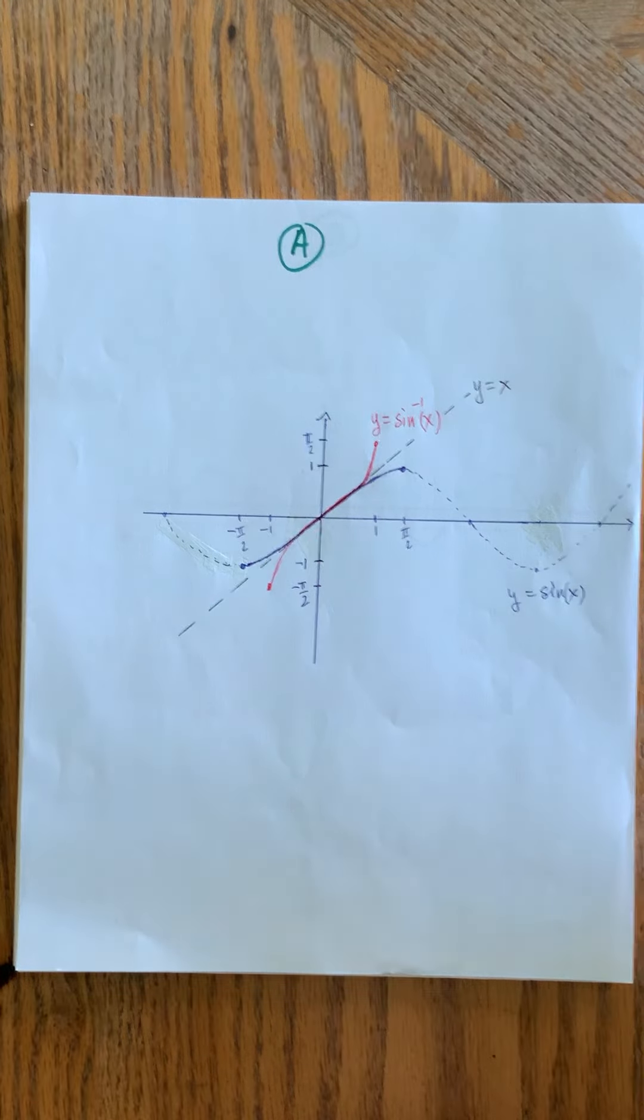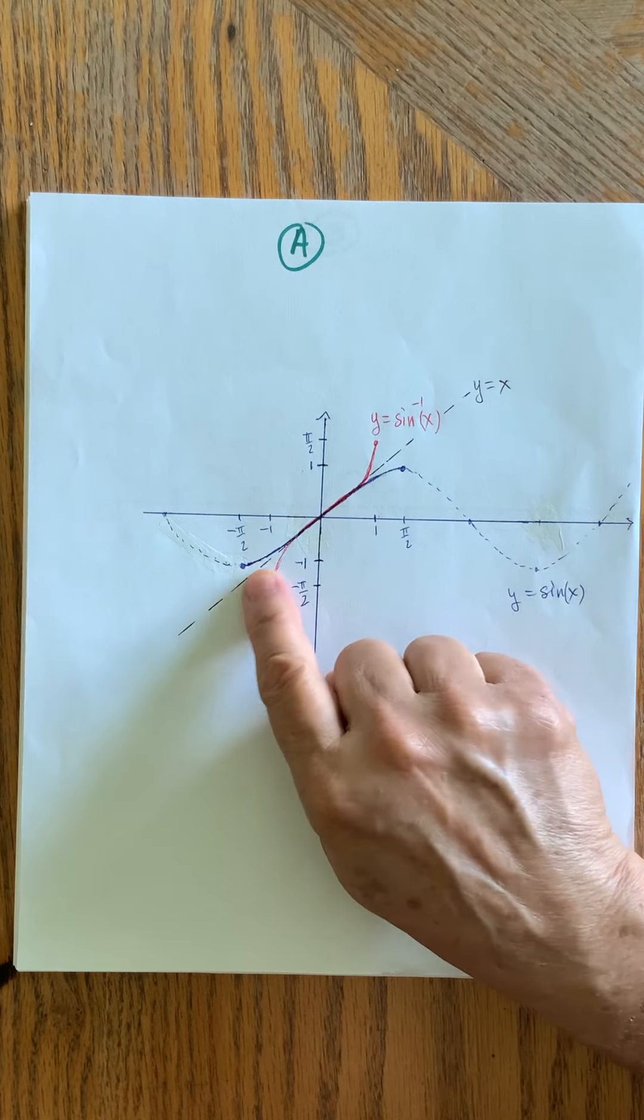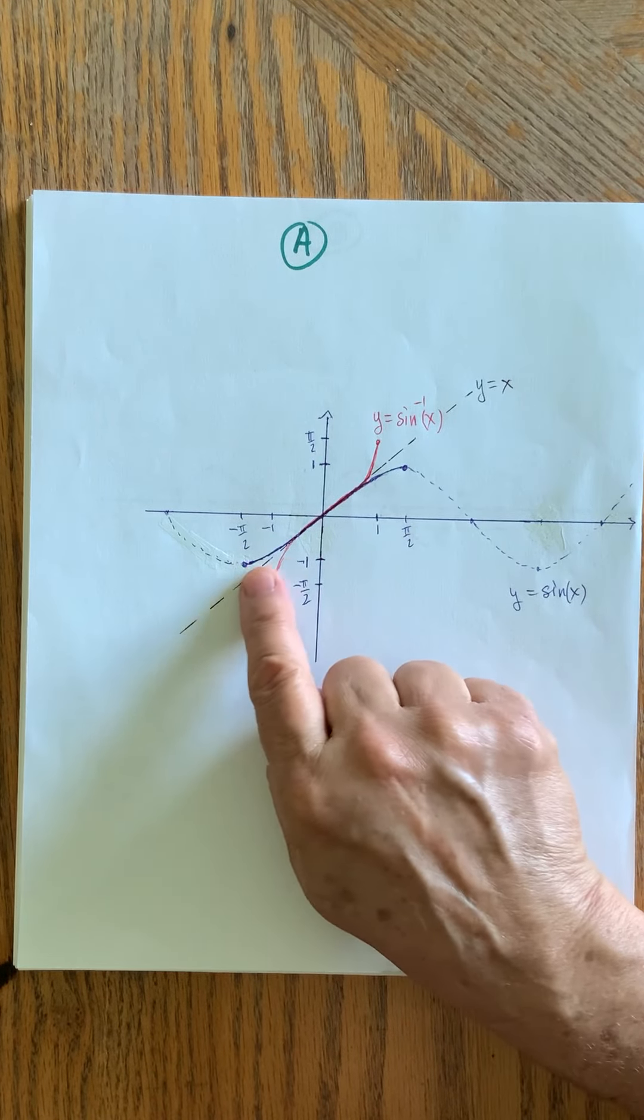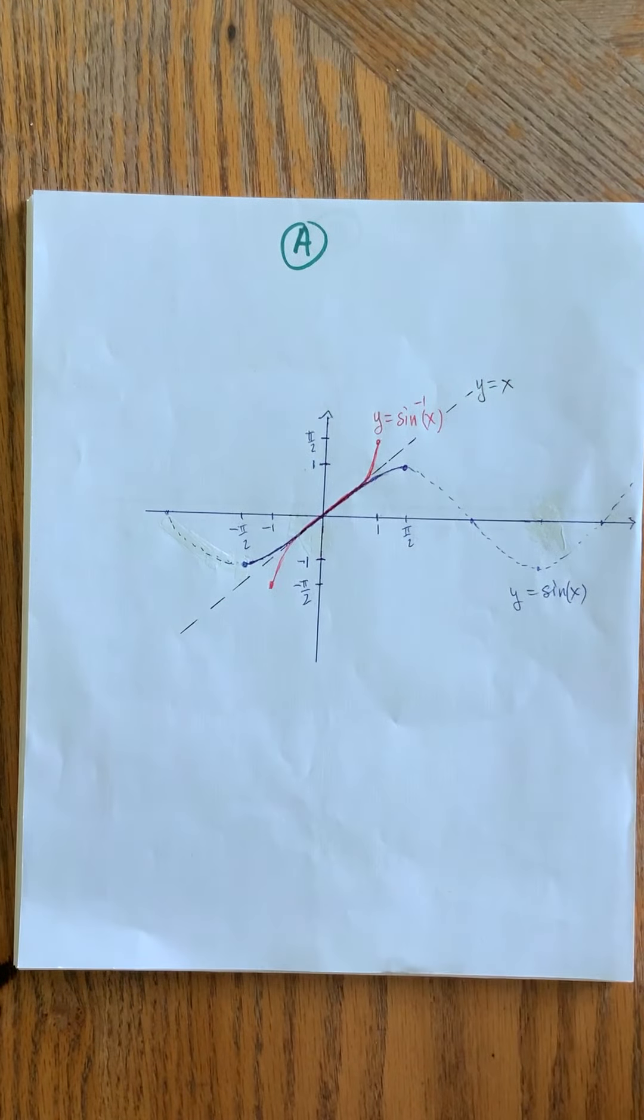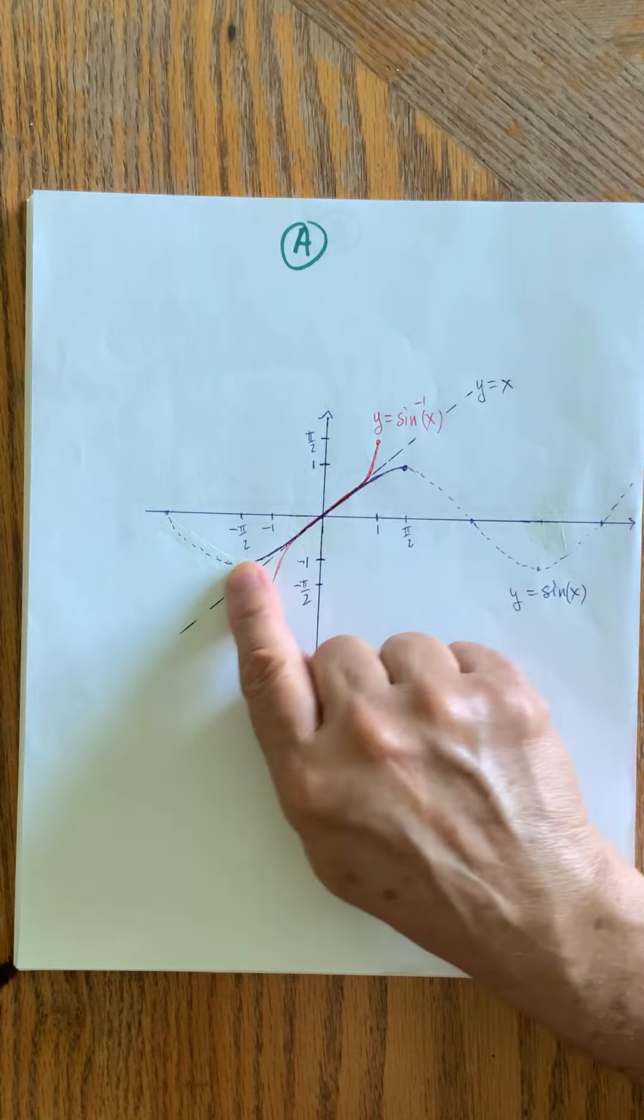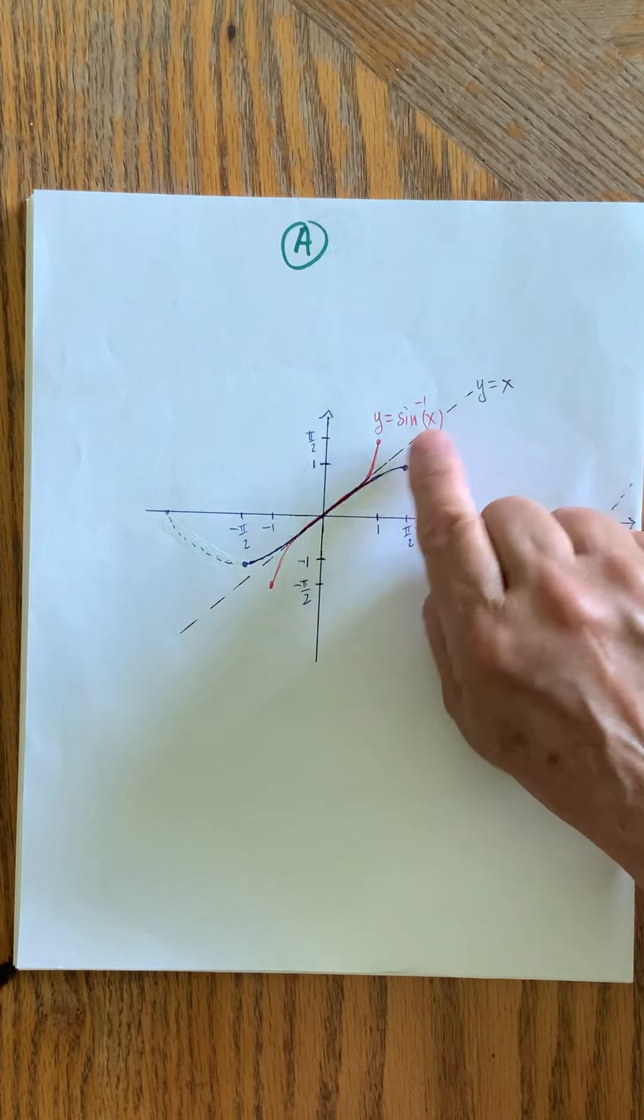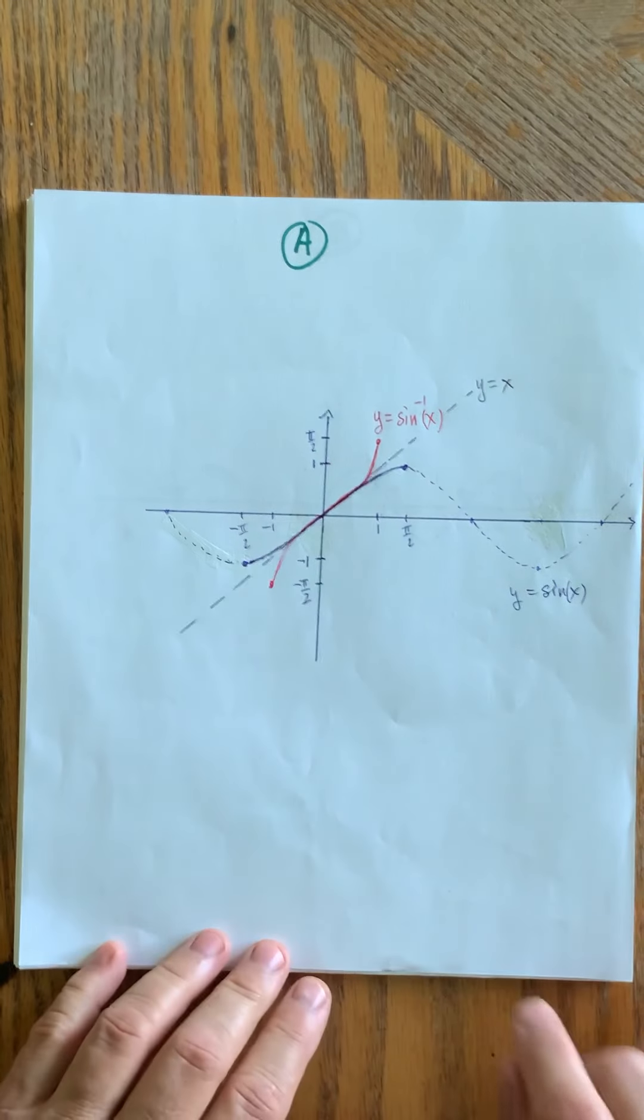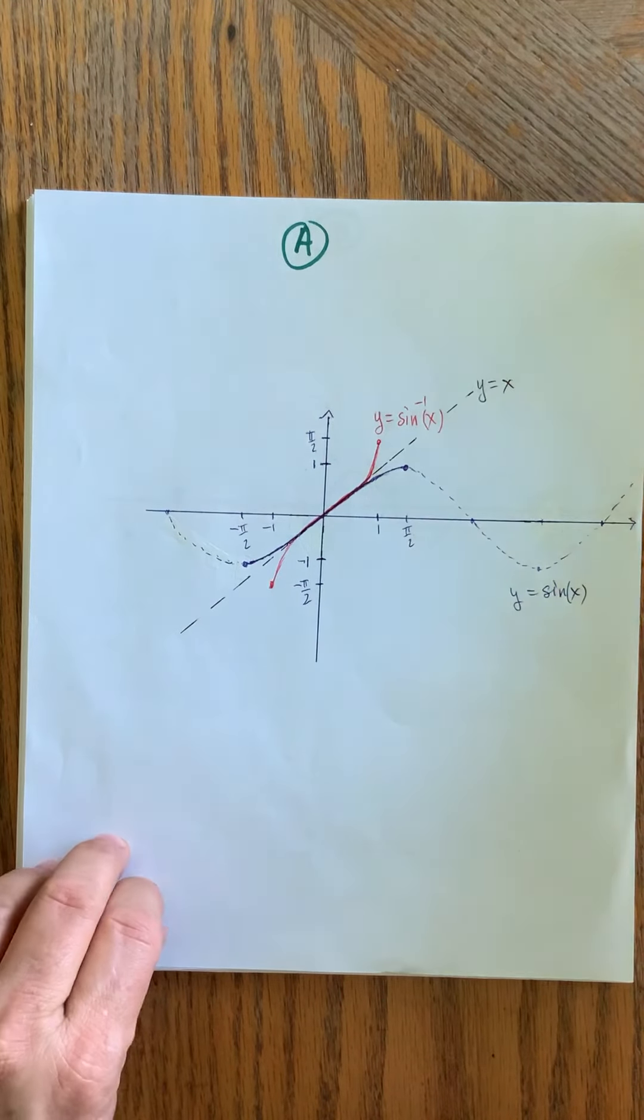So what happened then is we had to restrict the sine function from negative π/2 to π/2. That's this blue part here. And then once it's restricted, we could reflect that little piece of the graph in the line y equals x and get this red function y equals the inverse sine of x. Here you can see they're equidistant from the line y equals x. But that's why that happened.